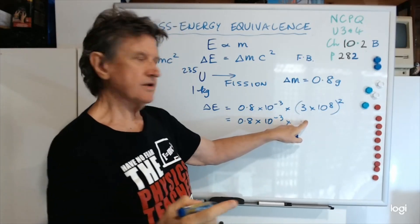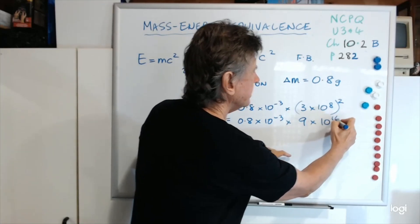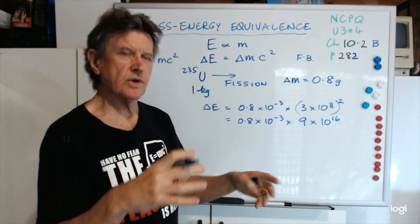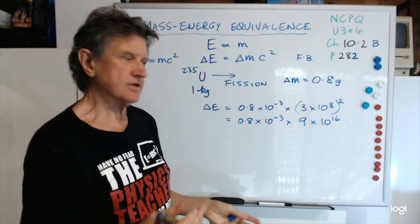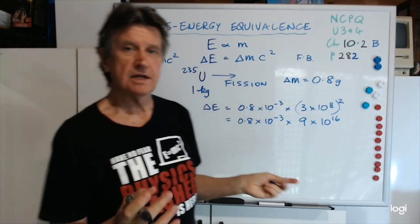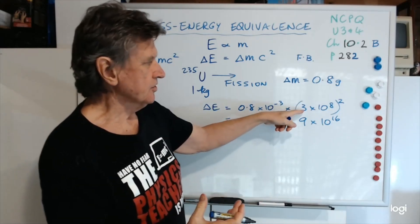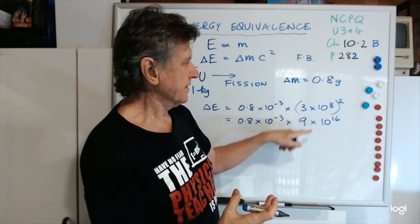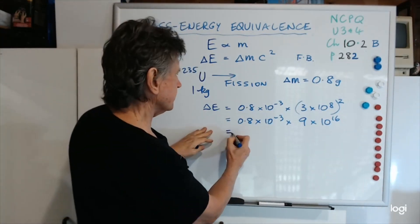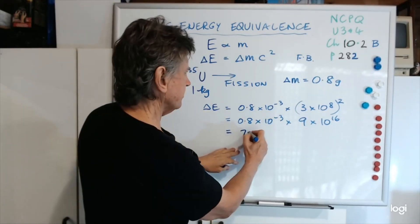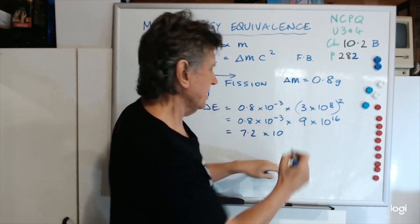The problem students often get into here is when they're using the calculator, they put in 3 times 10 to the 8 squared, but they forget to square the whole lot, and you end up getting 3 by 10 to the 16, and that's a common mistake. Often in multi-choice questions, one of the wrong options will be allowing for students who forget to square the 3 as well, and it'll be out by a factor of 3. Now that just comes to 0.8 times 9 is 7.2 times 10. Take 3 away from 16, and you get 13.